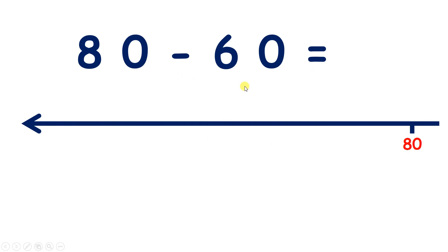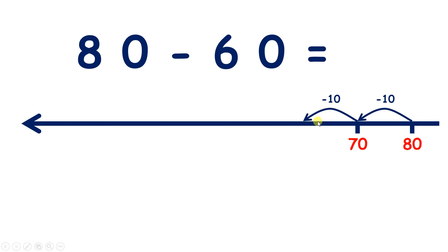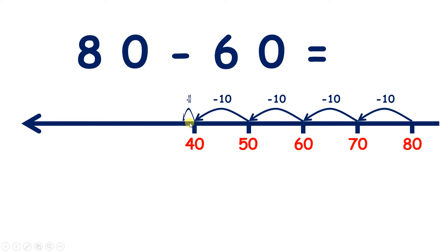Now 80 subtract 60 on a number line. So if we're subtracting 60, we're subtracting ten six times. So subtract 10 and we have 70. Subtract two tens, or 20 altogether, and we have 60. Subtract 30 and we have 50. Subtract four tens, or 40, and we have 40. Subtract five tens, or 50, and we have 30. Subtract six tens, or 60, and we're left with 20.